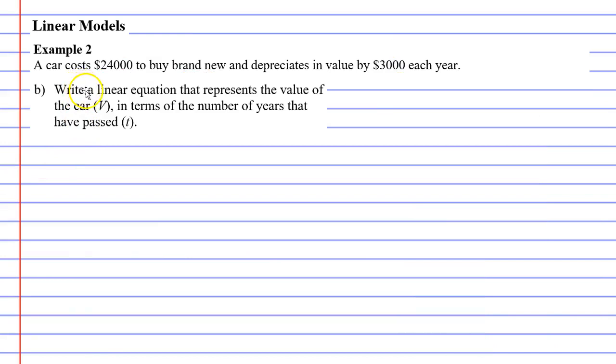Question B wants us to write a linear equation that represents the value of the car V in terms of the number of years that have passed T. And we're going to use our gradient intercept formula, which is Y equals MX plus B, remembering that M stands for gradient and B stands for Y-intercept.